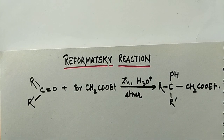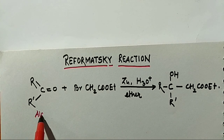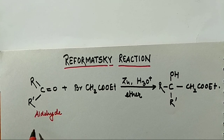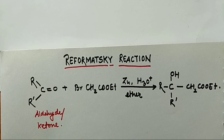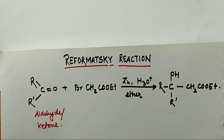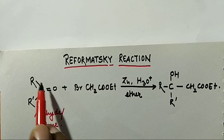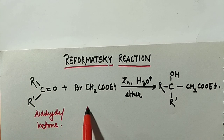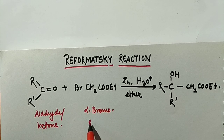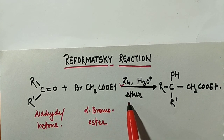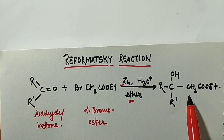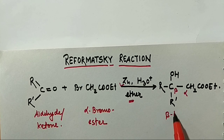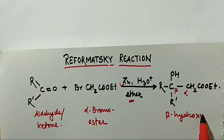We will start with the Reformatsky reaction today. The Reformatsky reaction is the reaction between aldehyde and ketone. Take aldehyde or ketone and treat it with alpha-haloester — usually alpha-bromoester — in the presence of zinc as a catalyst in an inert solvent like ether to produce beta-hydroxyester. This reaction is called the Reformatsky reaction.